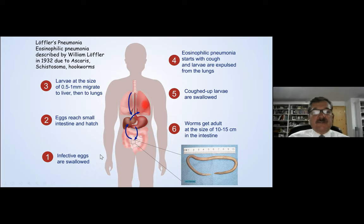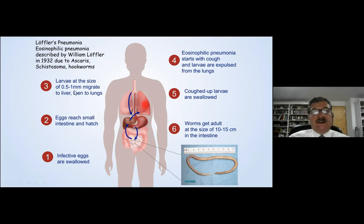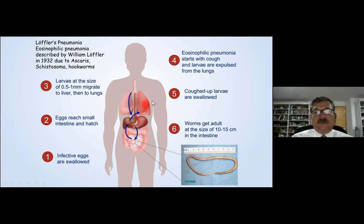We follow the numbers here together. The infective eggs of Ascaris, Schistosoma, or Hookworms are swallowed. Afterwards, eggs reach the small intestine and hatch. The larvae go out of the eggs and are at the size of 0.5 to 1 mm. They migrate to the liver and then to the lungs, and eosinophilic pneumonia takes place, which is called Loeffler's pneumonia. There is a cough, and every single larva is expelled from the lungs at that time.